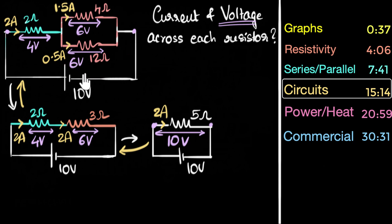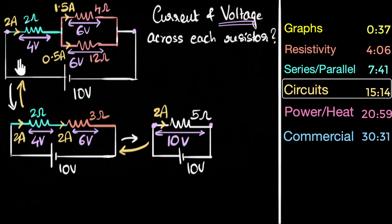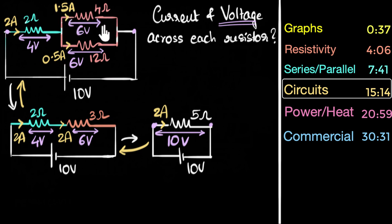The key idea: first find equivalent resistance, then solve the simplified circuit, then go backwards. If the equivalent came from a series combination, current is the same — find voltage. If it came from a parallel combination, voltage is the same — find current. Questions may also be framed as: what current does the battery draw (two amperes), what does a voltmeter read (four volts), or what does an ammeter read (1.5 amperes).